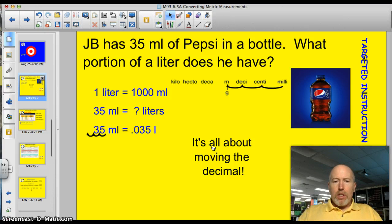Here's my younger brother JB. JB has 35 milliliters of Pepsi in a bottle. What portion of a liter does he have? Well, we know that one liter is equal to 1,000 milliliters.